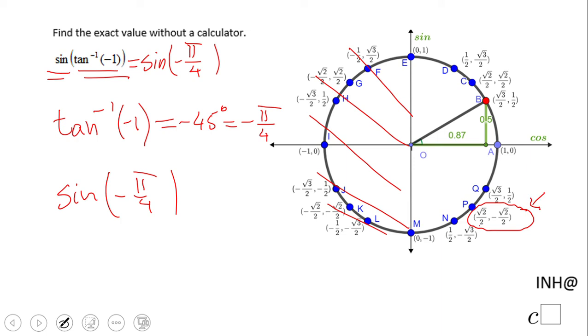The sine is the second value in the ordered pair, which is going to be negative square root of two over two.